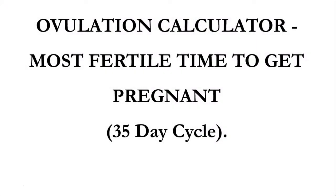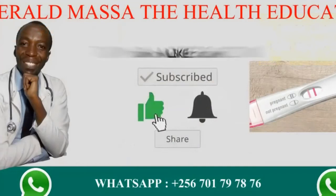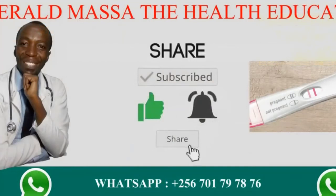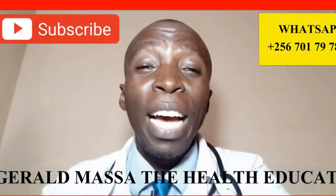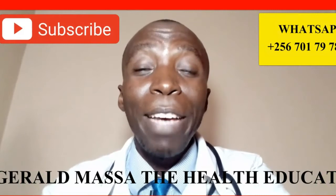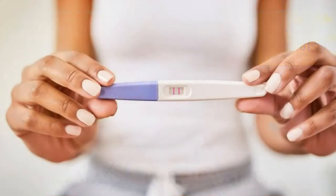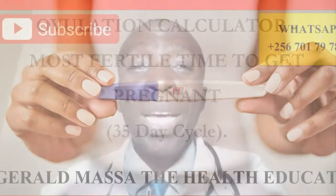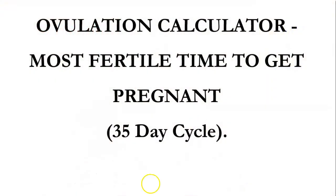The ovulation calculator — the most fertile time to get pregnant. We are looking at a 35-day cycle ovulation calculator. In this video you are going to learn about the most fertile time to get pregnant if you have a 35-day cycle.